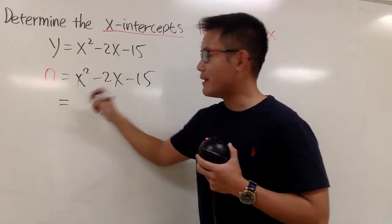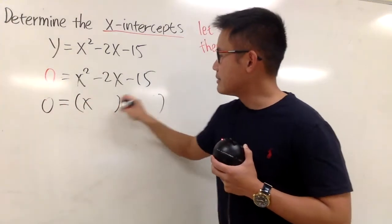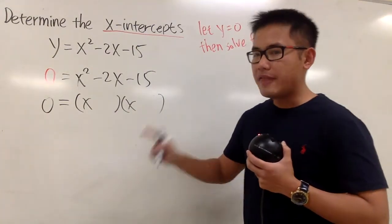We can just do this by factoring, right? So let's see. We know that x times x will give us x squared.